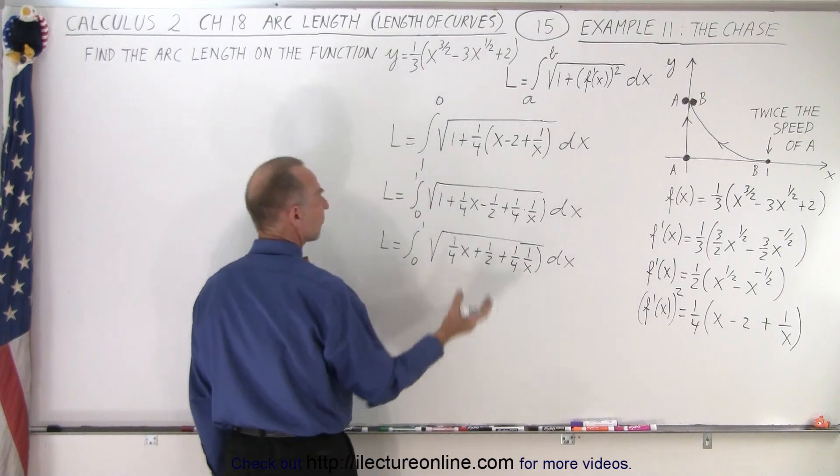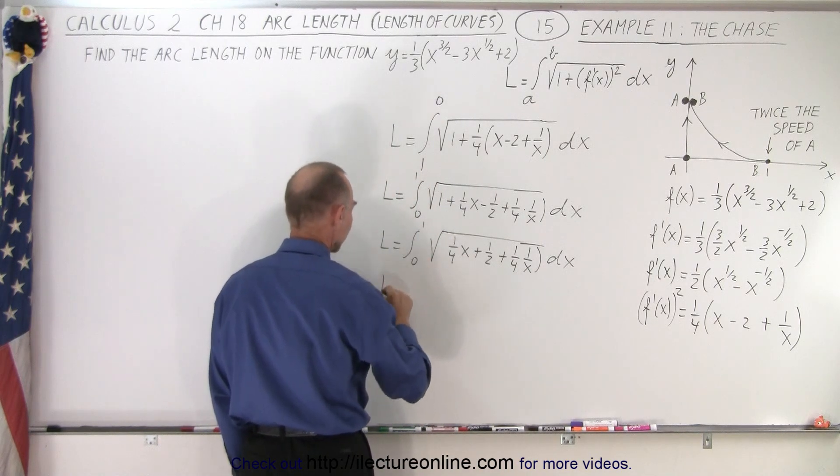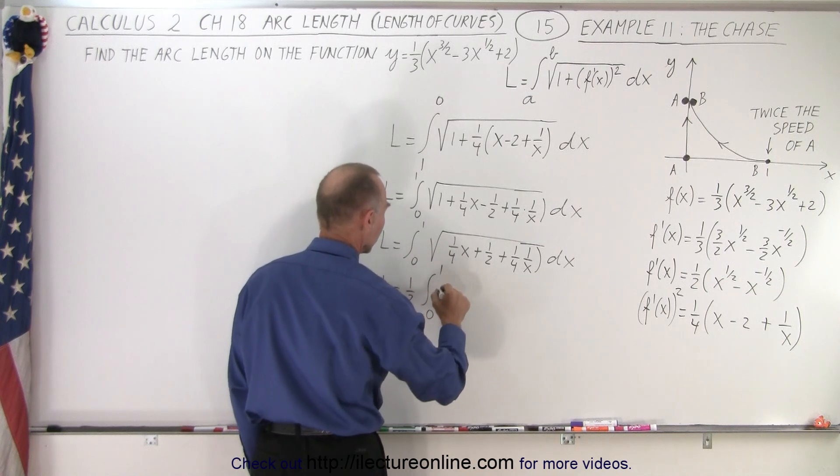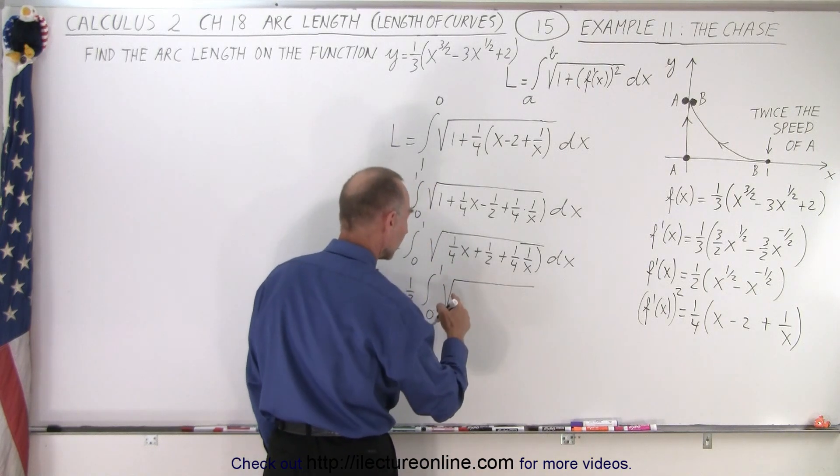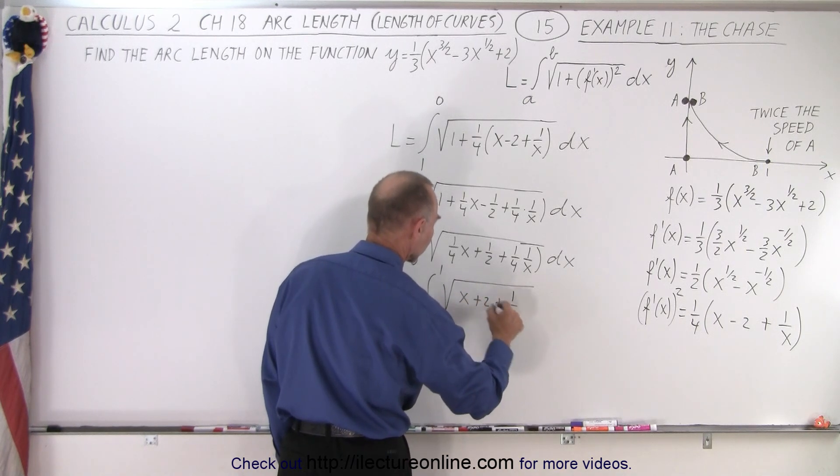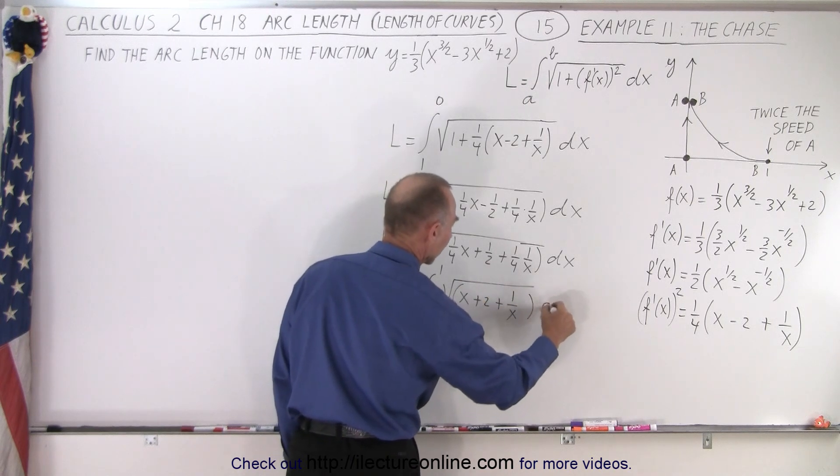And then we can factor out a one-quarter, bring it in the front. We have L is equal to one-half times the integral from zero to one times the square root of x plus two plus one over x times dx.